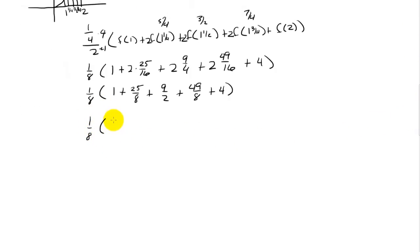The common denominator is going to be 8, so we have 8 eighths, plus 25 eighths, plus 36 eighths, plus 49 eighths, and then finally plus 32 eighths. If we add these together, 8 and 25 is 33, another 36 is 69, plus another 49 is 118, and then finally 32 is 150.